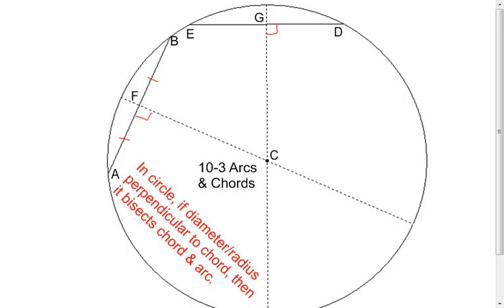So the first thing that I'm going to look at is a theorem that says, in a circle, which we're working with obviously, if the diameter or the radius, it doesn't matter which one, is perpendicular to a chord, then it bisects the chord and the arc.